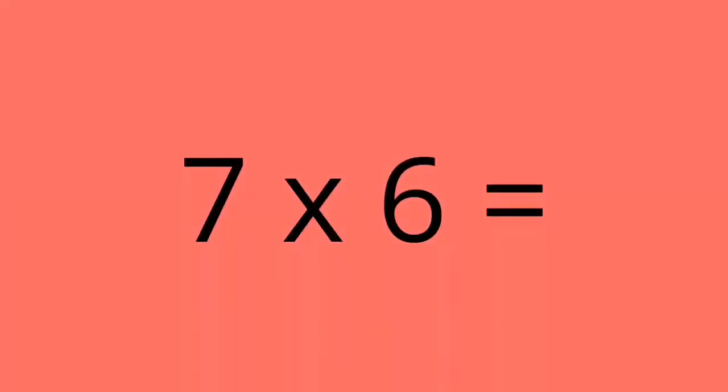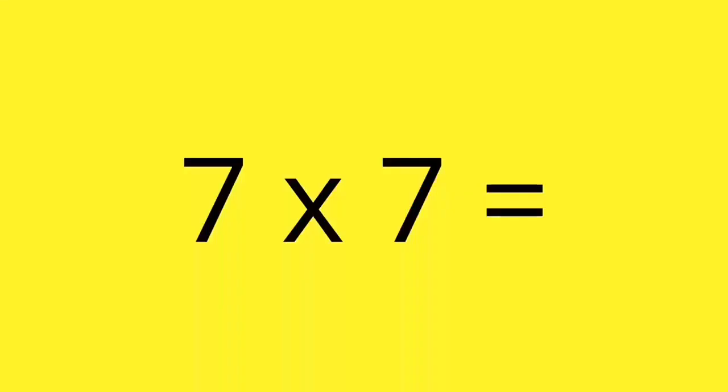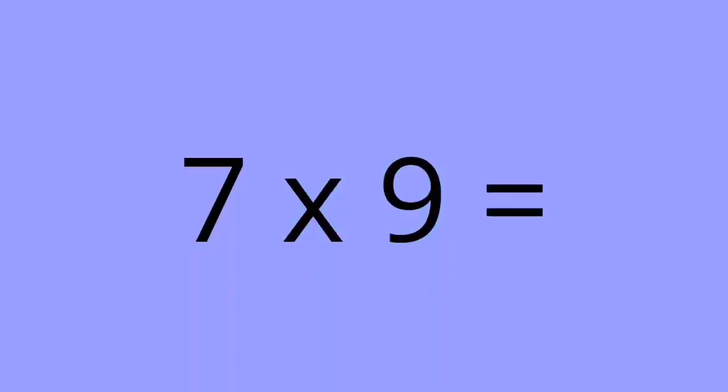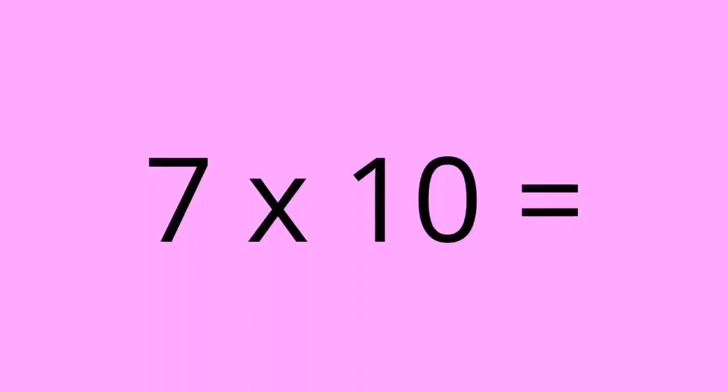7 times 6 equals 42. 7 times 7 equals 49. 7 times 8 equals 56. 7 times 9 equals 63. 7 times 10 equals 70. 7 times 7 equals 80.